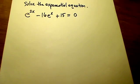Hello, this is Professor Poyser, and I want to show you how to solve this exponential equation, which is e to the 2x minus 16 e to the x plus 15 equals 0.